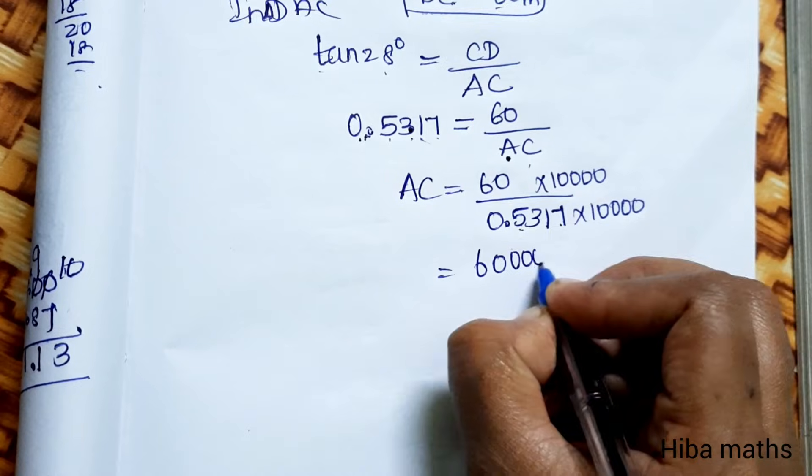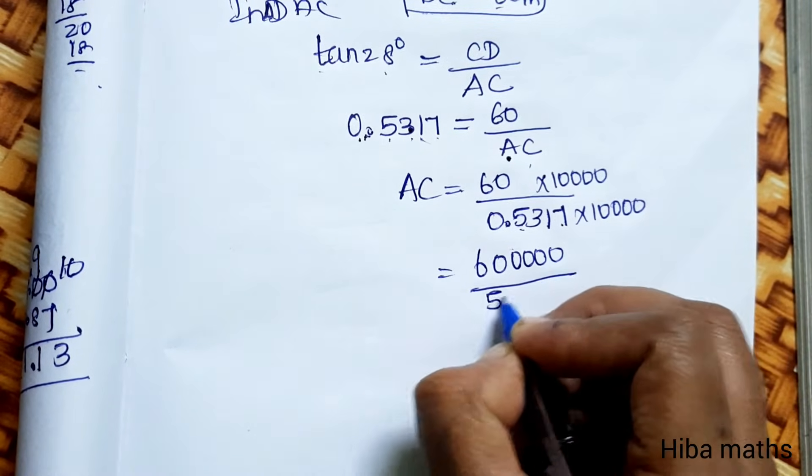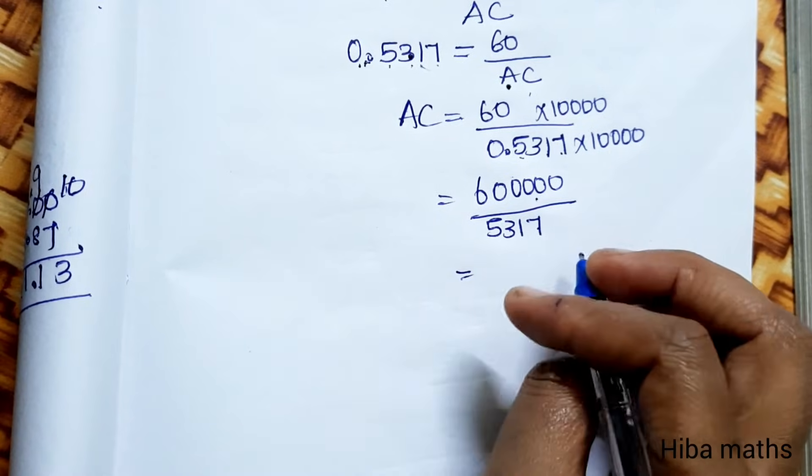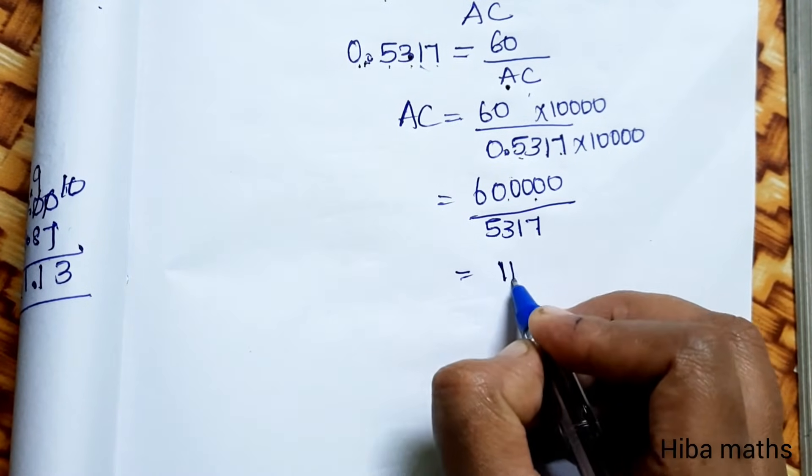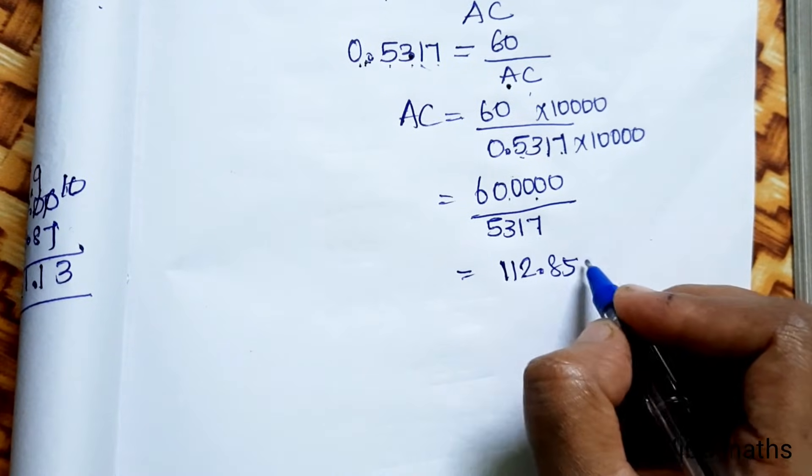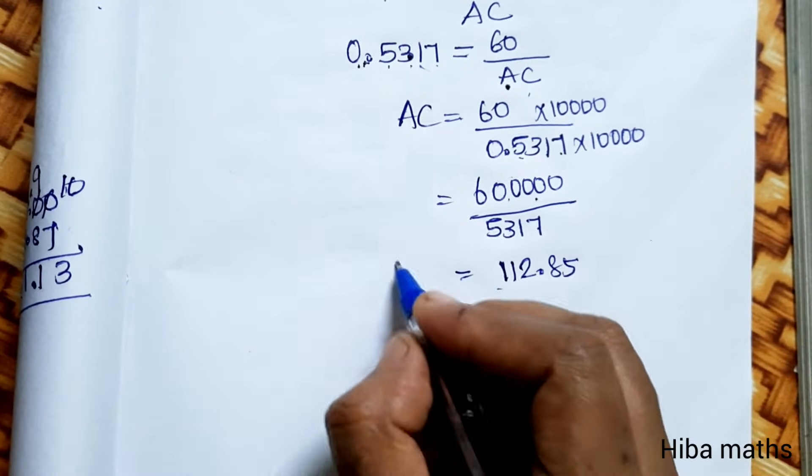60 into 10,000 divided by 5317. This value is easy to divide. We need to answer this. If we do full AC value we can understand AB.